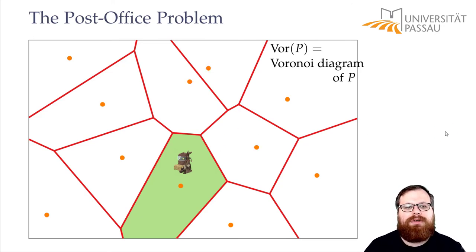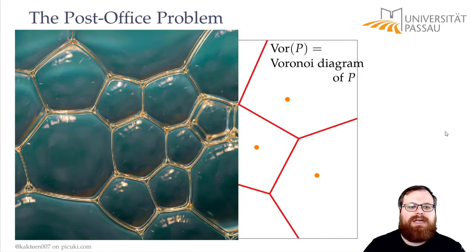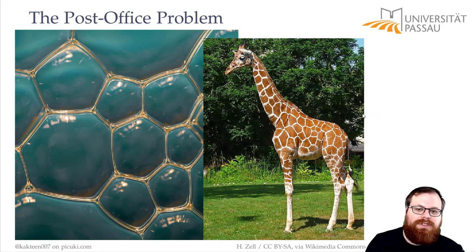And the shape of these Voronoi diagrams that's something that you can even find in nature. For example if you have soap bubbles then at the point where they meet it also looks very similar to what we have here. Or even just the shape of the skin of a giraffe also looks kind of like a Voronoi diagram.